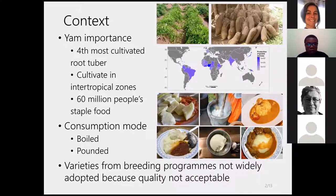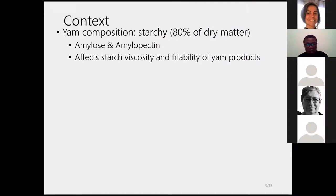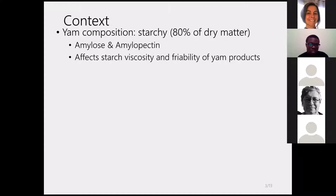When talking about yam quality, we must take into account its chemical composition. The principal component of yam is starch, in terms of dry matter. This starch is composed of amylose and amylopectin, and many authors report that the ratio of amylose to amylopectin affects starch viscosity and functional properties of yam products, such as freezability.